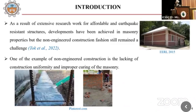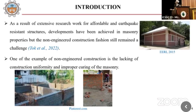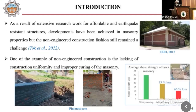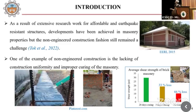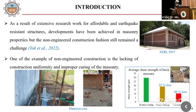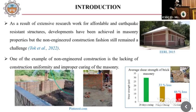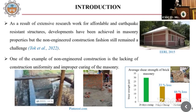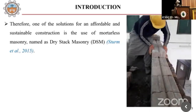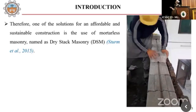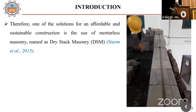We are talking about the shortage of water, so we need water for curing in our buildings. If we can reduce this water requirement, we can save water for future generations. With 28-day curing, you can see the full shear strength capacity of the structure. With only 3-day curing, there is a 33% loss in shear strength, and with no curing, there is a 66% loss in shear strength. One solution for affordable and sustainable construction is the use of mortarless masonry, known as dry stack masonry.